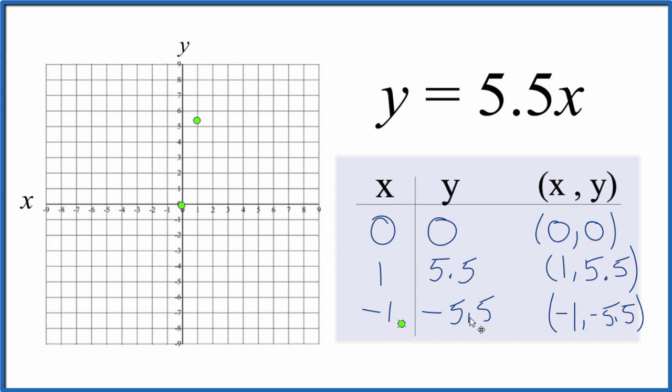So we have negative 1 and negative 5.5, negative 1, negative 5.5. And you can see there's our line. Let's put a line through that. And then we'll put arrows, show that goes to infinity.